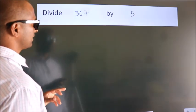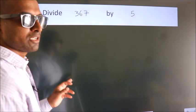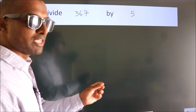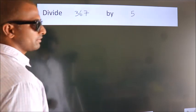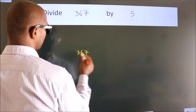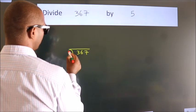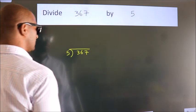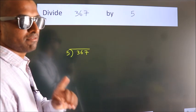Divide 367 by 5. To do this division, we should frame it in this way: 367 here, 5 here. This is your step 1.